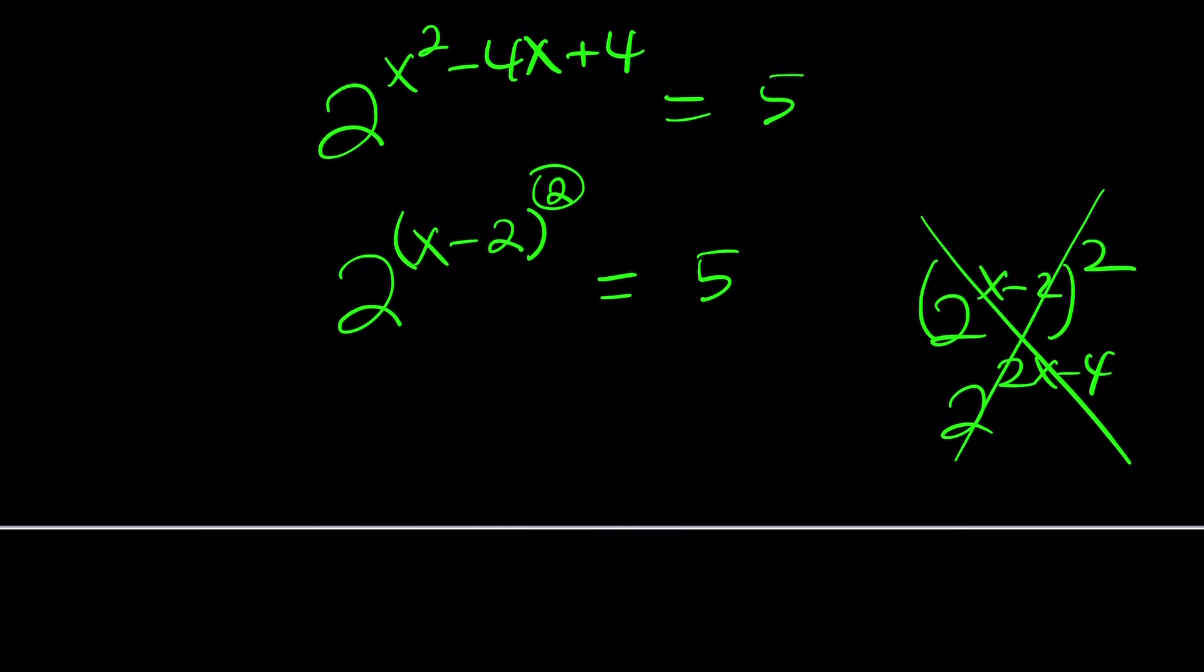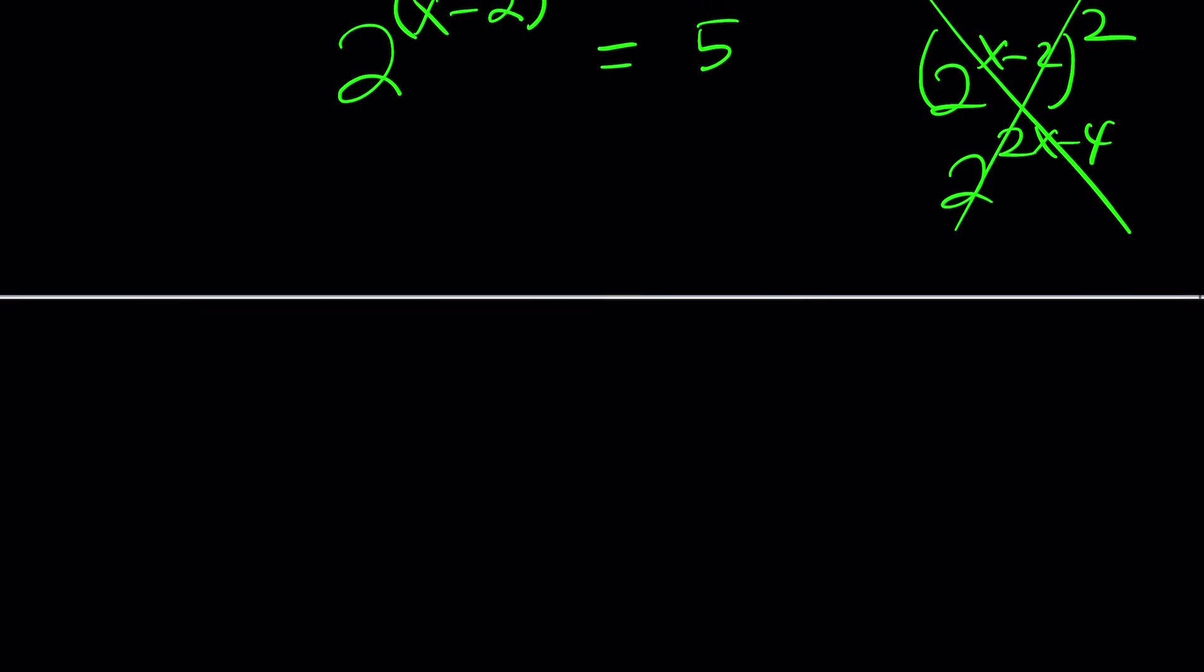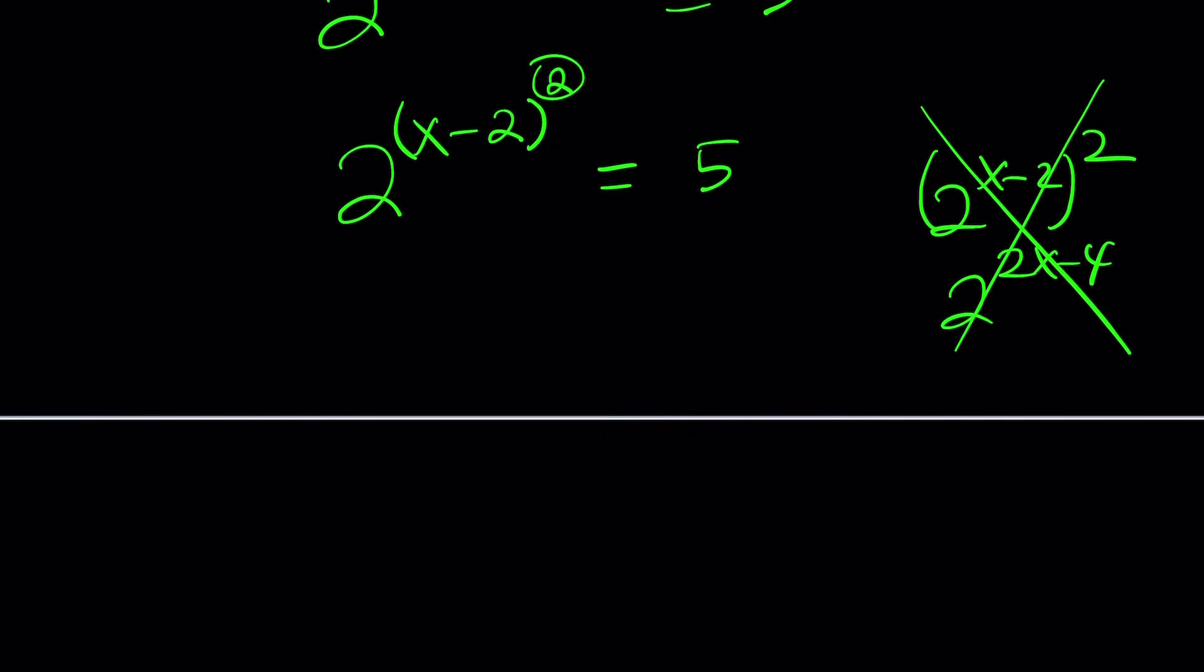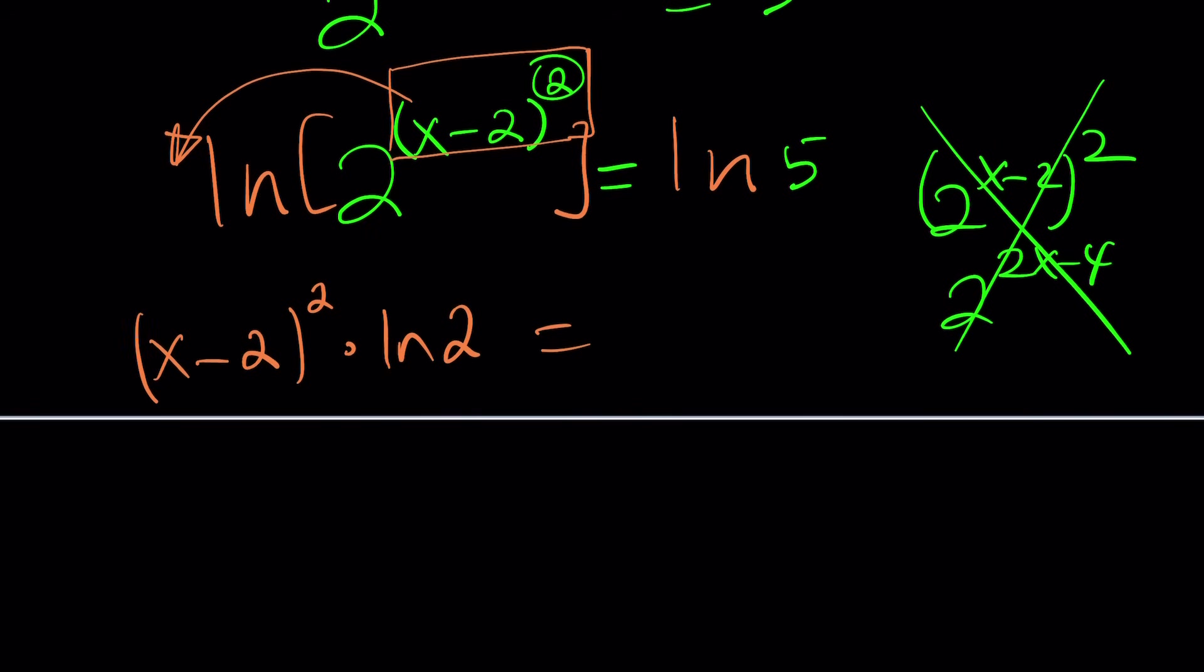You just need to log. Which base? Doesn't matter. I'll use a natural log. But trust me, it's going to be a lot easier this time because of the perfect square. It just makes everything perfect. So ln this and ln that. Obviously, this is the exponent for two. So we're going to be able to move it.